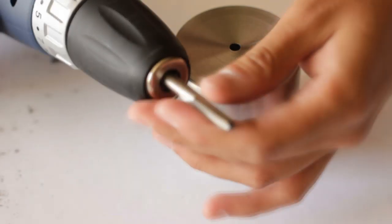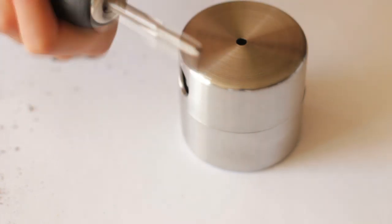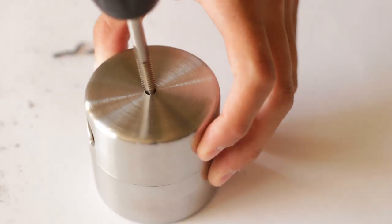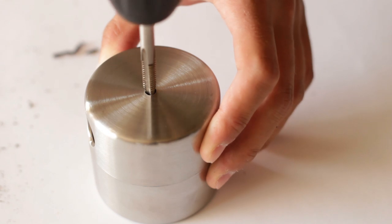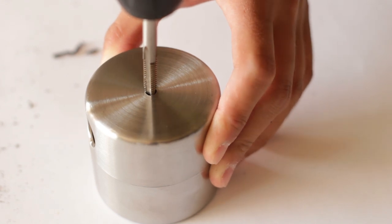We need to put our tap into the electric screwdriver and tap the holes. Remember not to apply pressure when tapping the holes. Also use slow speed to do this in order to get a nice threaded hole.